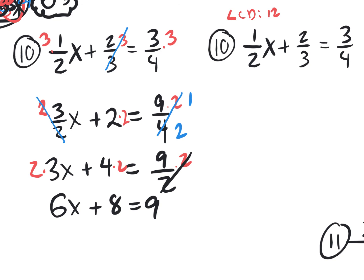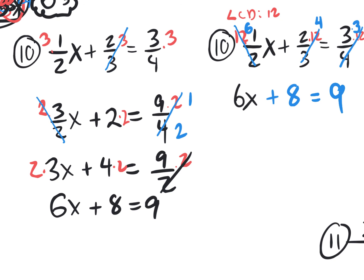Multiply everything by that LCD: times 12 on the first fraction, times 12 on the second fraction, times 12 on the third fraction. On the first fraction, 12 divided by 2 is 6. 6 times the 1x that's left over is 6x. On the second fraction, 12 divided by 3 is 4, and then 2 times 4 is 8, so plus 8. On the last one, 12 divided by 4 is 3, then 3 up on top times 3 gives 9. So equals 9. We got rid of all fractions at the same time.